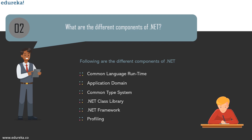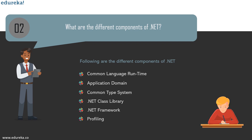Application Domain is a logical region where the .NET runtime runs and executes code, providing security and isolation for managed code. The Common Type System (CTS) is a standard specifying how type definitions and values are represented in memory, allowing programs written in different languages to share information. The .NET Framework Class Library is a comprehensive collection of reusable types including classes, interfaces, and data types. Profiling tools help developers optimize application performance, especially for CPU and memory, while APM tools monitor production servers.